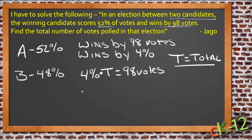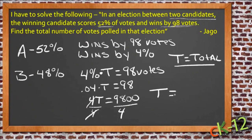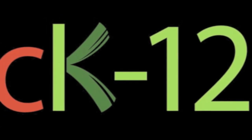We can write this as a decimal: 0.04 times T equals 98. Since dividing with decimals is tricky, let's multiply everything by 100 — move the decimal over two places — so we get 4T equals 9800. Then we divide both sides by 4. Half of 9800 is 4900, and half of that is 2450. So T, the total votes, is 2450.